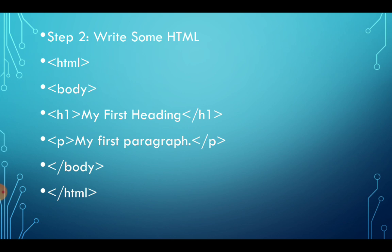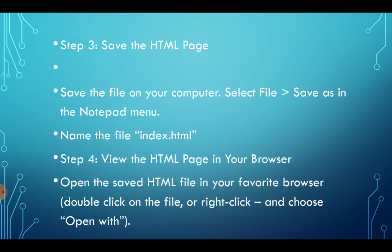We can skip the head tag if we don't want it. The 'h1' tag is a heading tag, and the 'p' tag is a paragraph tag — we'll learn more about those. Then you have to save the HTML file. Select File, Save As in the Notepad menu, and name the file 'index.html' — you can name it anything, but it must end in '.html'. Then, step 4: view the HTML in a browser. Open the saved HTML file by double-clicking it or right-clicking and choosing 'Open with'.